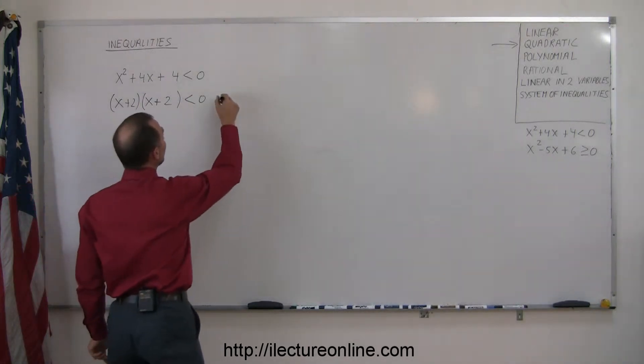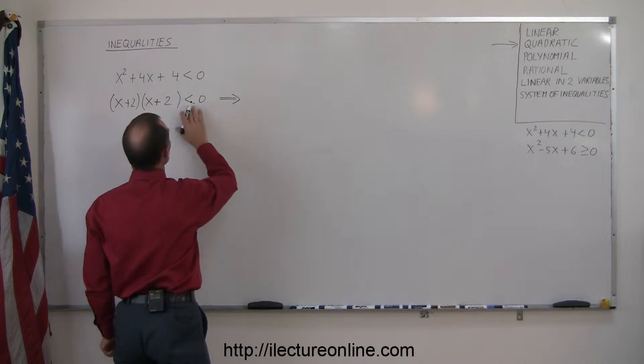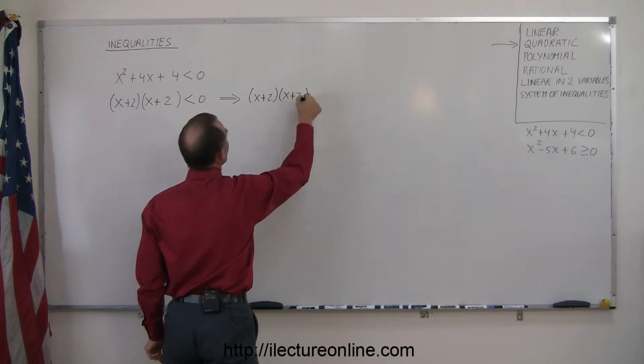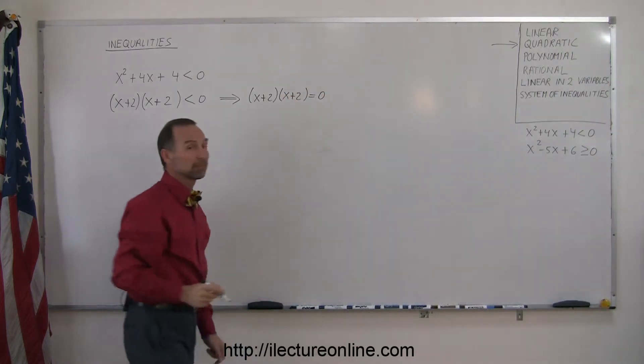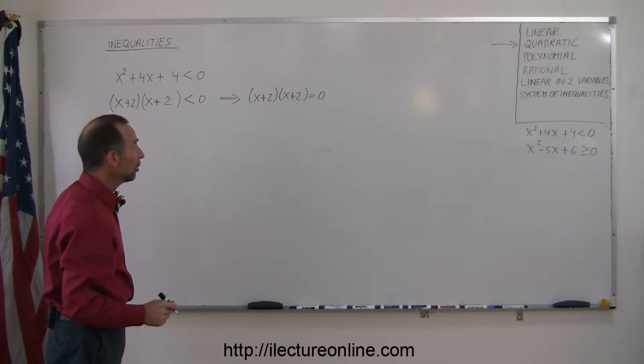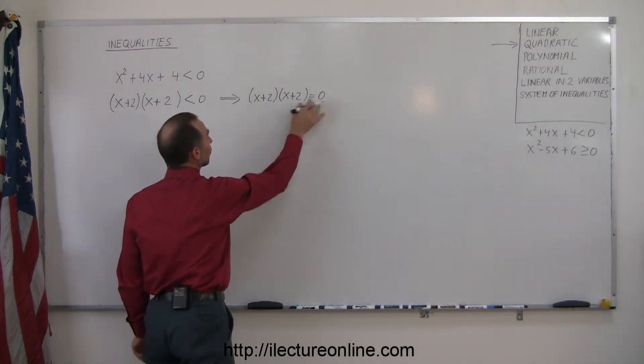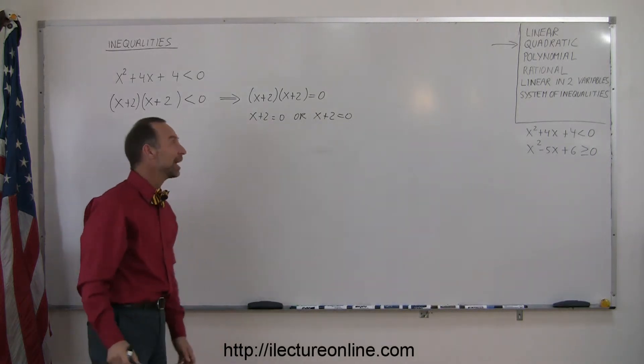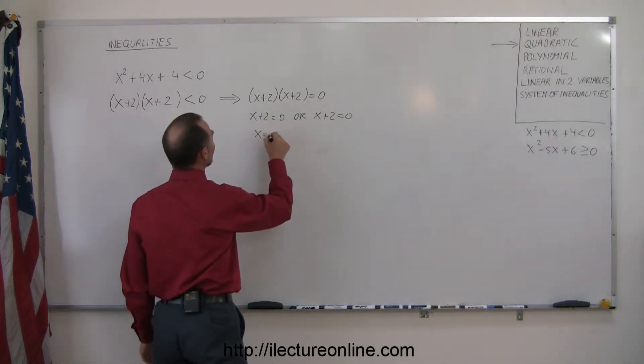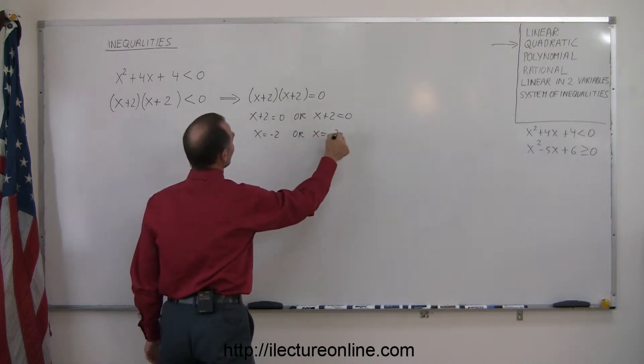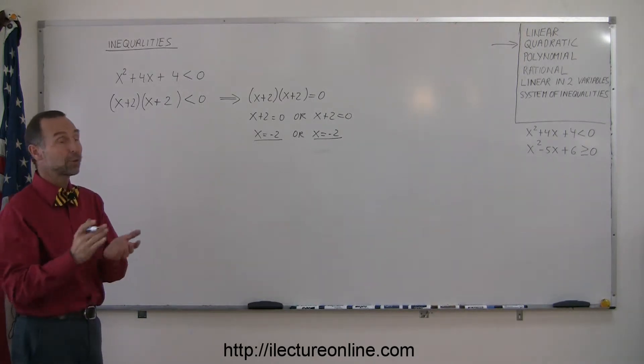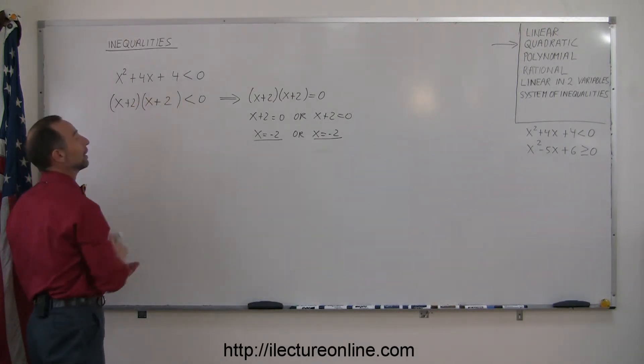So then the next thing we do is we write the equivalent equation, so we replace this with an equal sign, we get (x + 2) times (x + 2) equal to 0. And again, if we then solve this equation, if we multiply two binomials together to get 0, that means either x + 2 must equal 0, or x + 2 must equal 0. And of course, it's the same in either case, so when we solve both of these we get x equals negative 2, or x equals negative 2. There's only one solution to that particular quadratic equation, which means there's only one critical point to delineate the solution of our inequality.